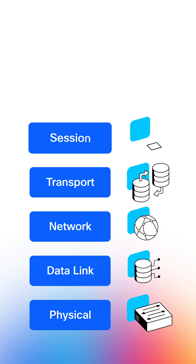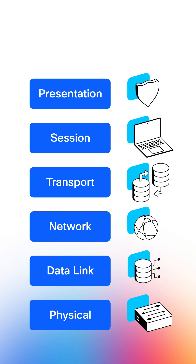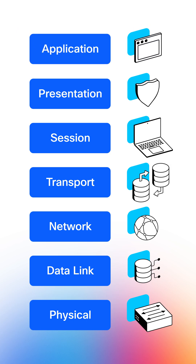The session layer establishes and manages a connection between applications, like when you safely log on to a site. The presentation layer can help make data more readable through decryption, or it can encrypt or compress data. At layer 7, the application layer provides services directly to user applications like your browser, using protocols like HTTP and FTP.